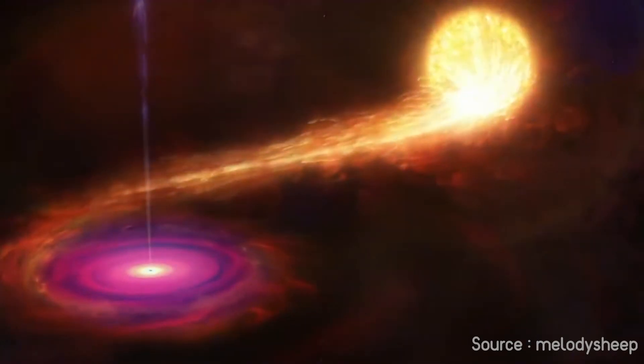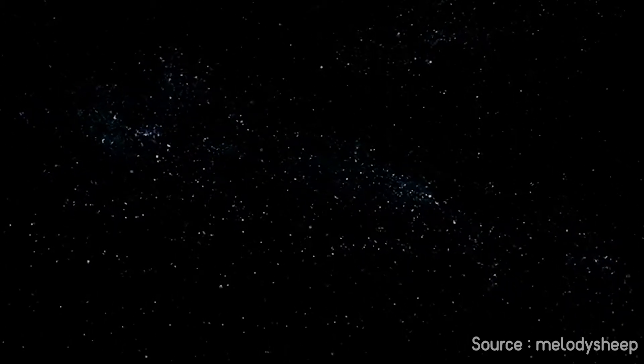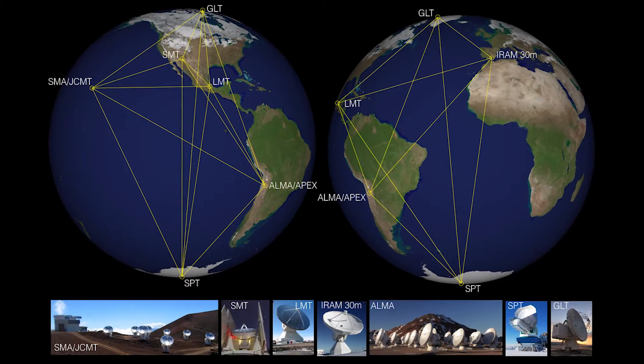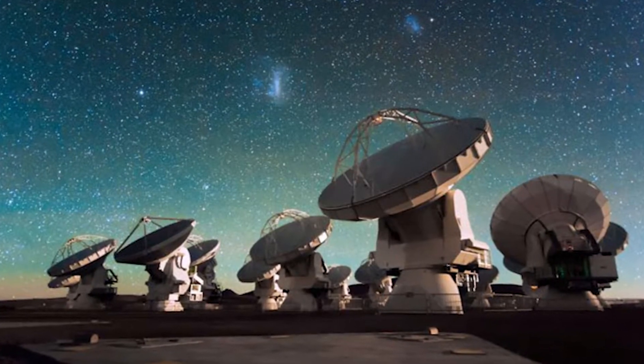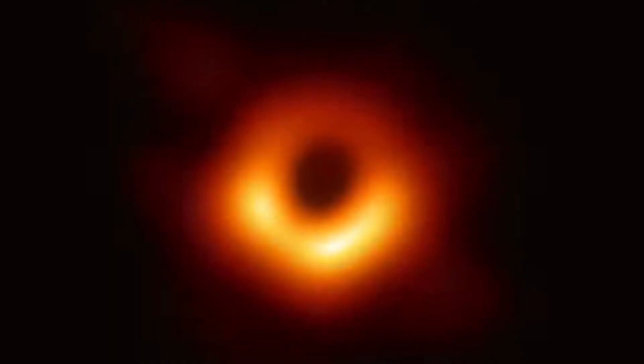But scientists have finally managed to do so. Scientists have obtained the first image of a black hole using the Event Horizon Telescope, located inside Messier 87, a galaxy that's 55 million light years away from Earth. The image of this cosmic phenomenon is the first-ever observation of a black hole.